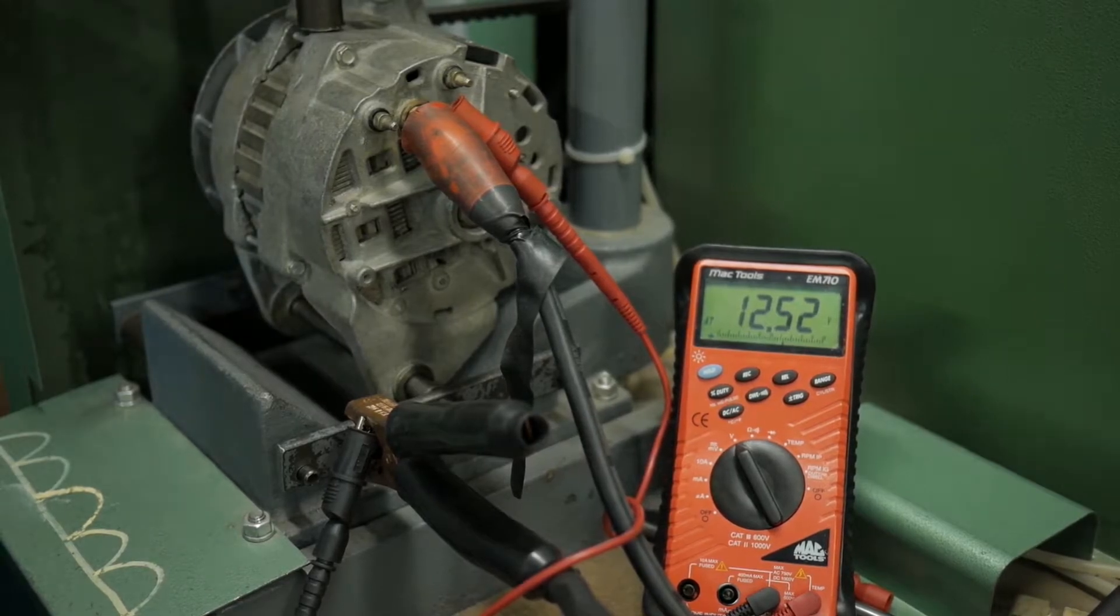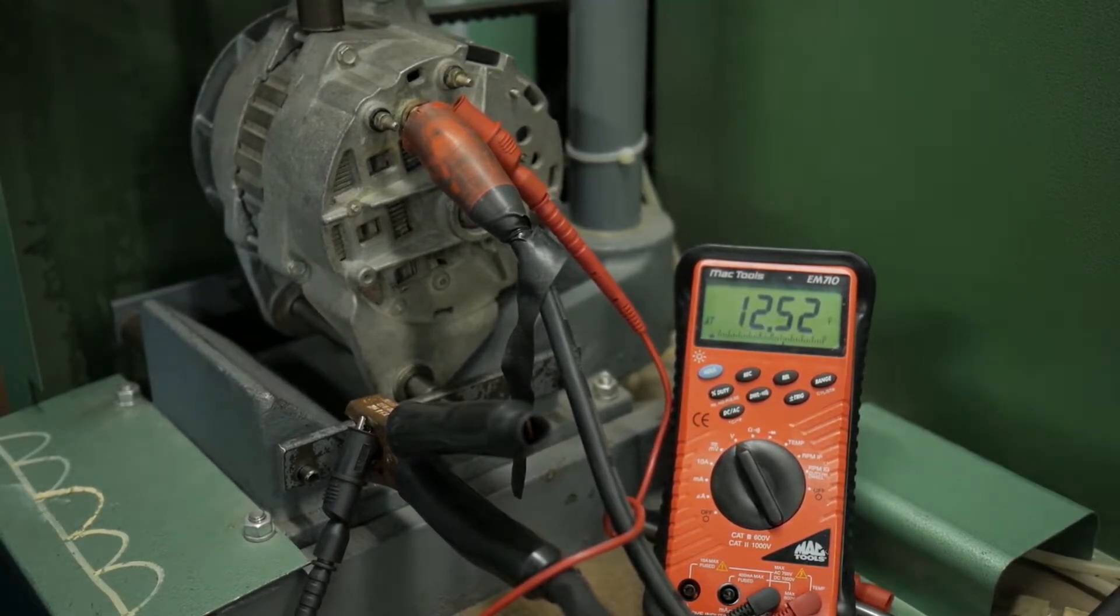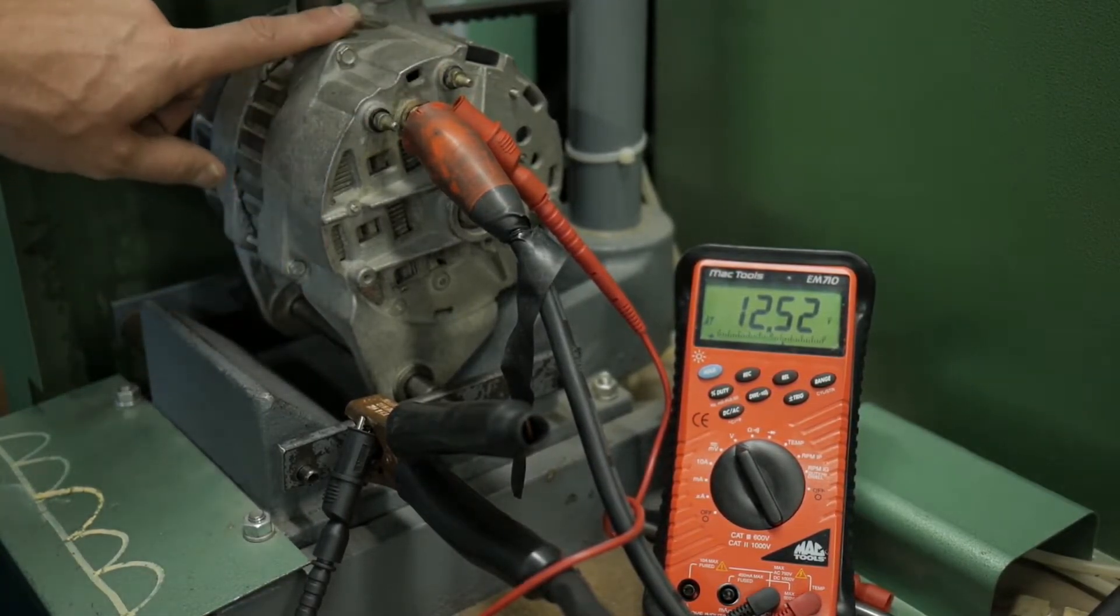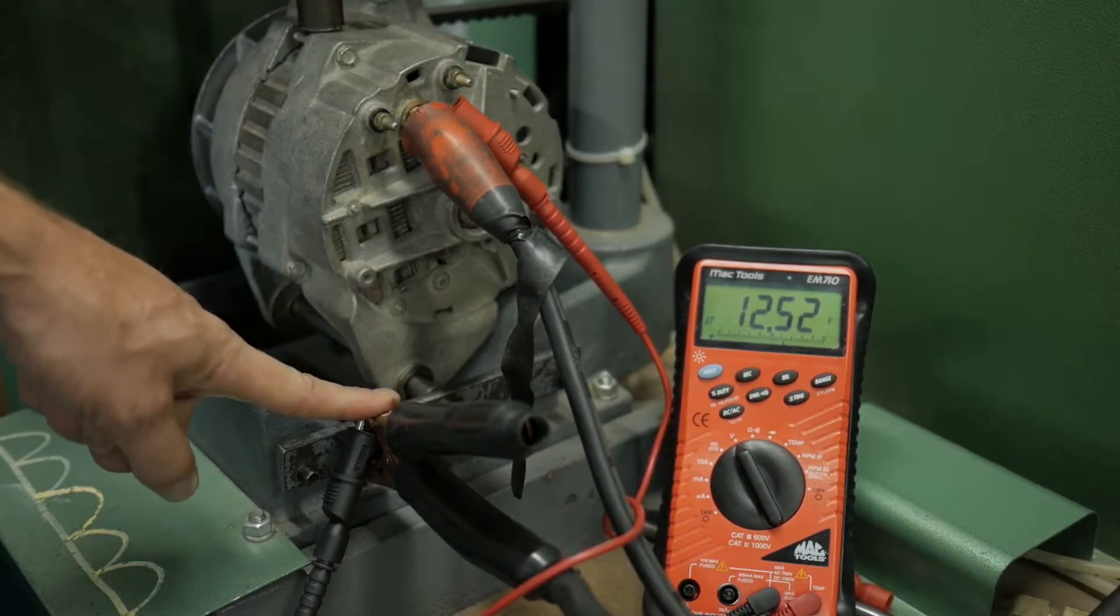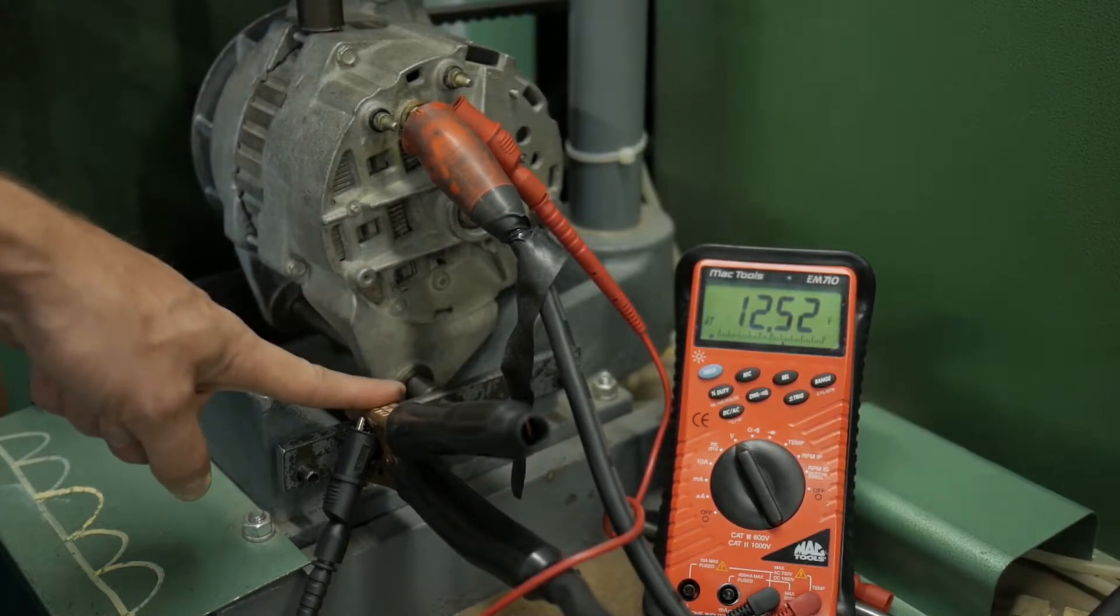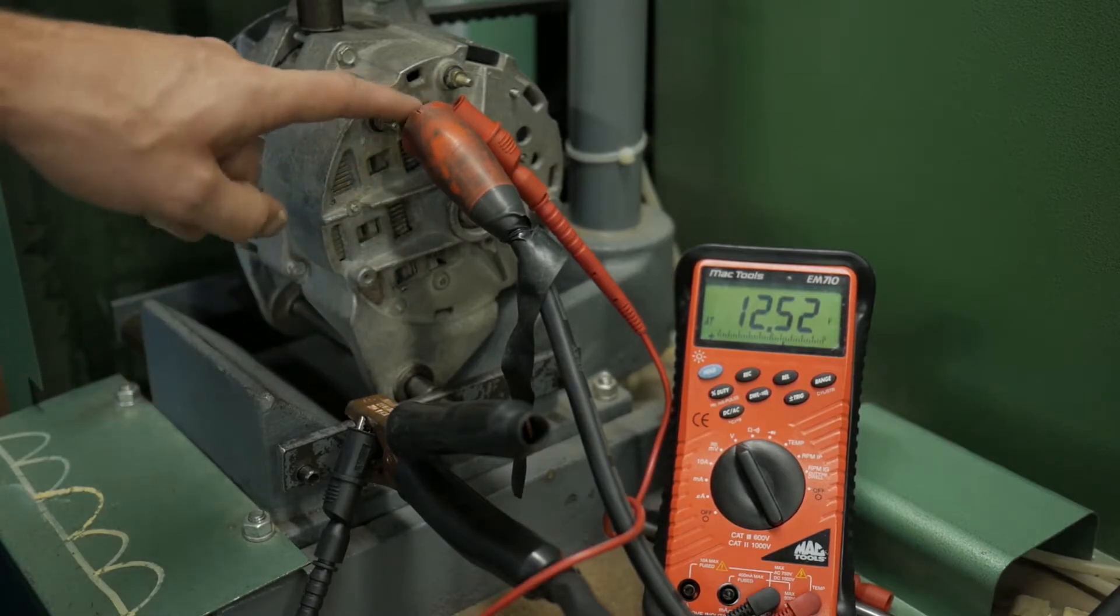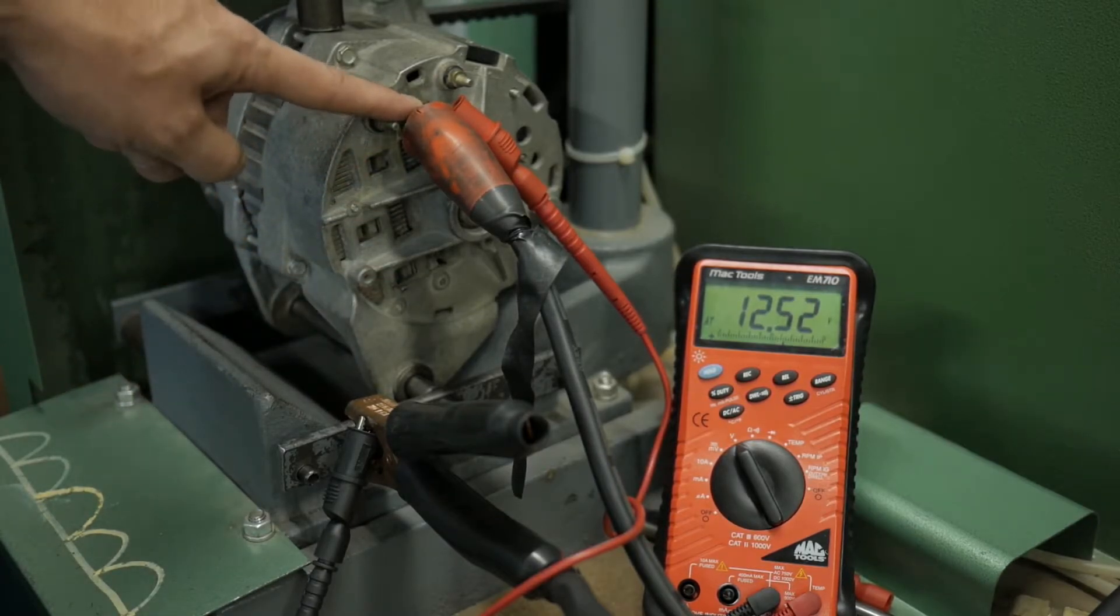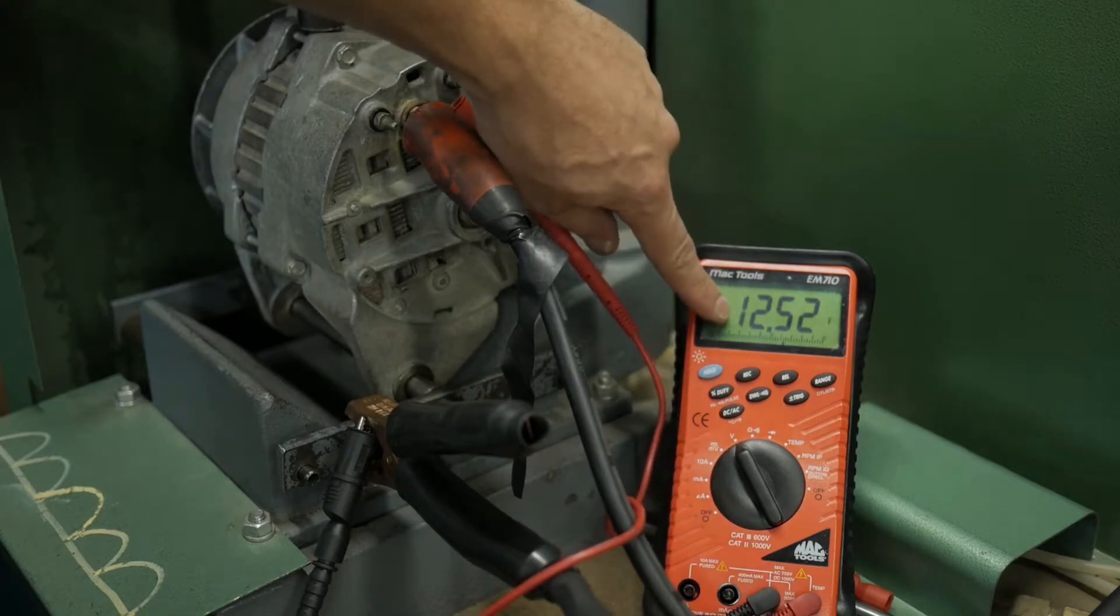We're going to take a look at an alternator on a test stand. The alternator is clamped into place. The negative cable from the test stand is mounted to the bracket, grounding the housing. Positive is on the output terminal of the alternator. This 12.52 volts is the open circuit voltage of the battery inside the test stand.